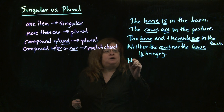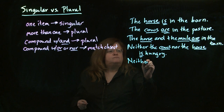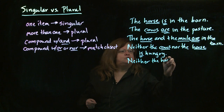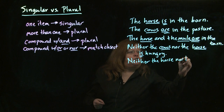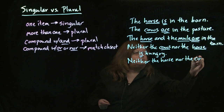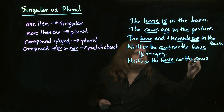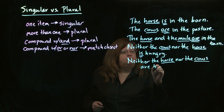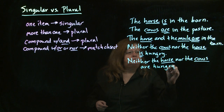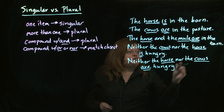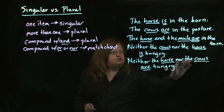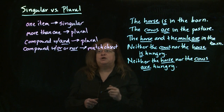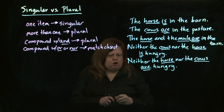On the other hand, if I had it the other way around: 'Neither the horse nor the cows are hungry.' In this case, the noun that's closest to the verb is plural — it's cows — so we use the plural form of the verb: are.